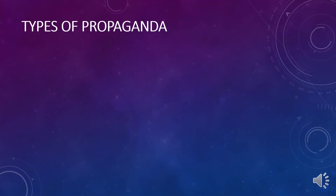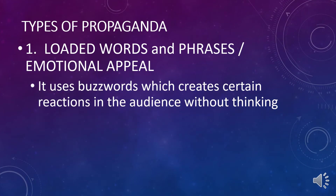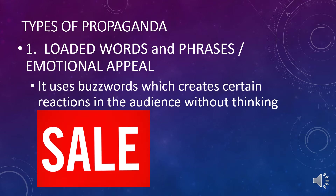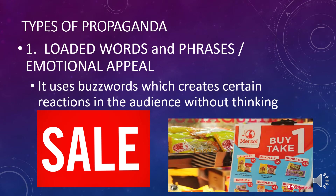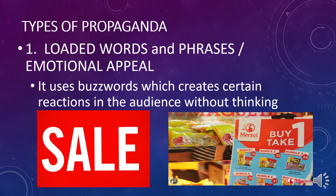There are 10 types of propaganda. First, we have loaded words and phrases, or emotional appeal. It uses buzzwords which create certain reactions in the audience without thinking. For example, if we see the word 'sale' in the mall or a buy-one-take-one promo, it appeals to the audience so that even if we don't need something, we go to the mall and buy something.